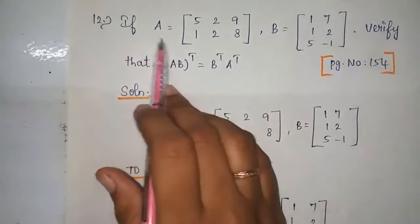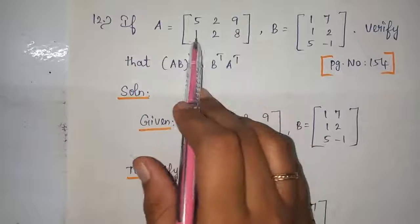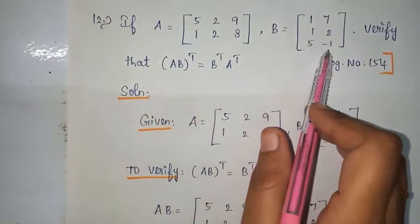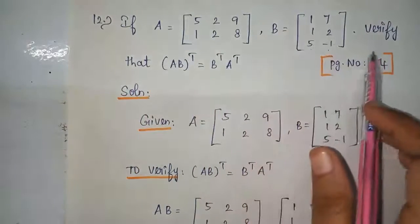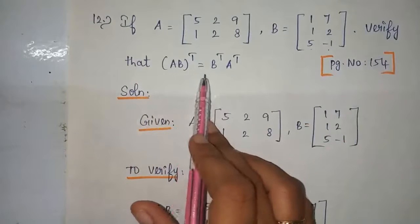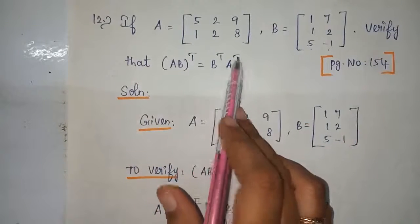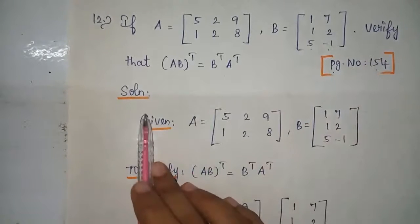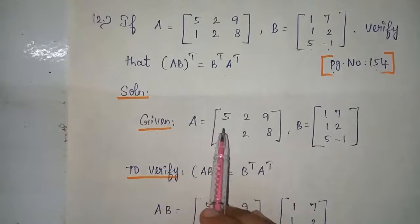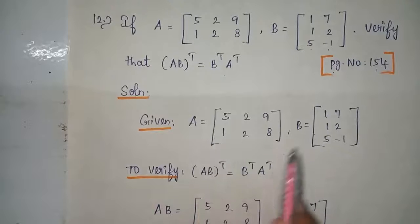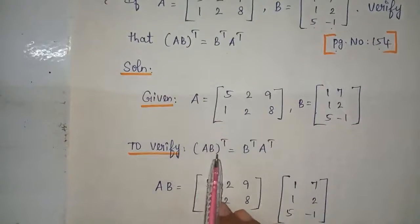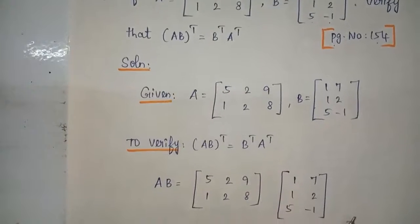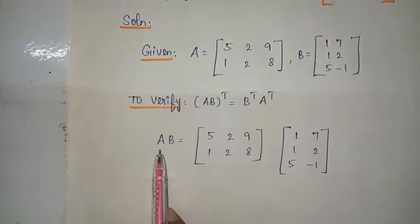Problem number 12: if A equals 5 2 9 1 2 8, B equals 1 7 1 2 5 minus 1, verify that (AB) transpose equals B transpose times A transpose, which is in page number 154. Solution: given matrices A and B. Verify that (AB) whole transpose equals B transpose times A transpose. First find the product AB by matrix multiplication.